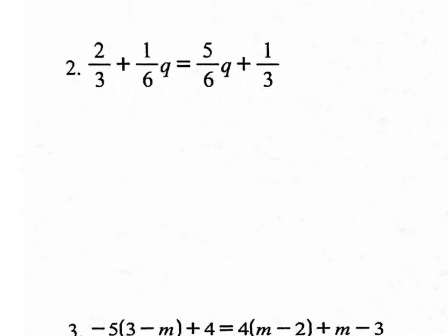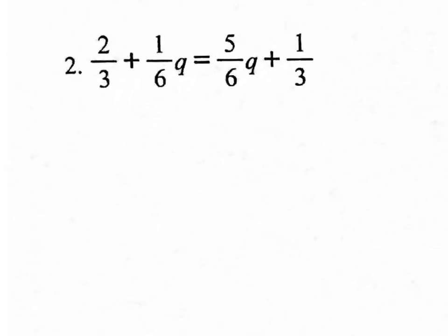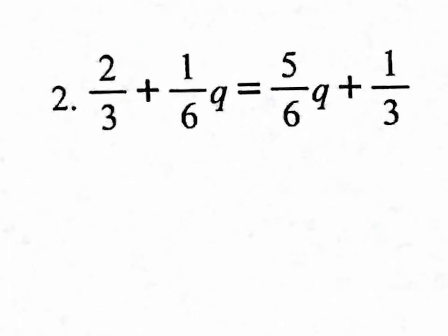So, number two — we have an equation that has a bunch of fractions in it. And the way to get rid of a fraction is to multiply everything by the denominator. So we have a 3 and a 6. Let's go for the bigger one: 6. So when we multiply everything by 6, let me zoom in a bit here.